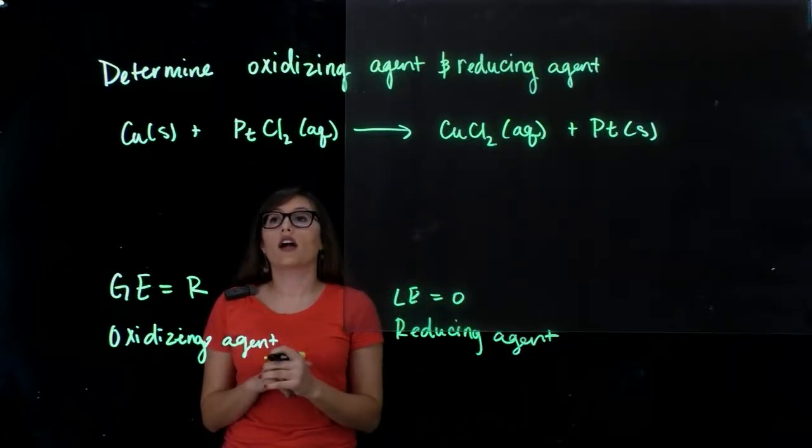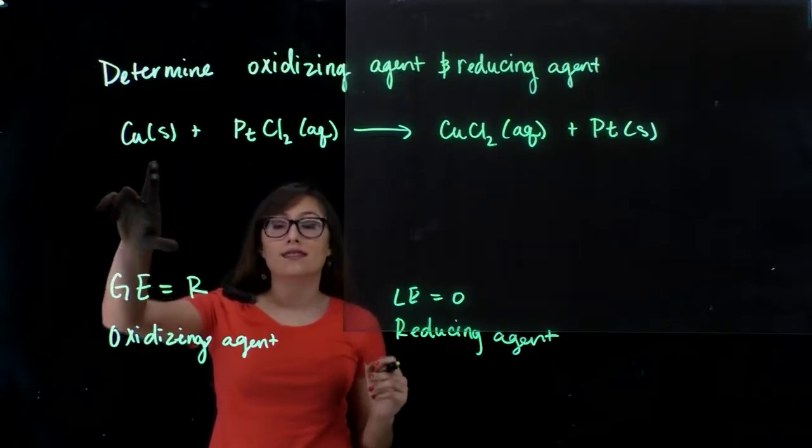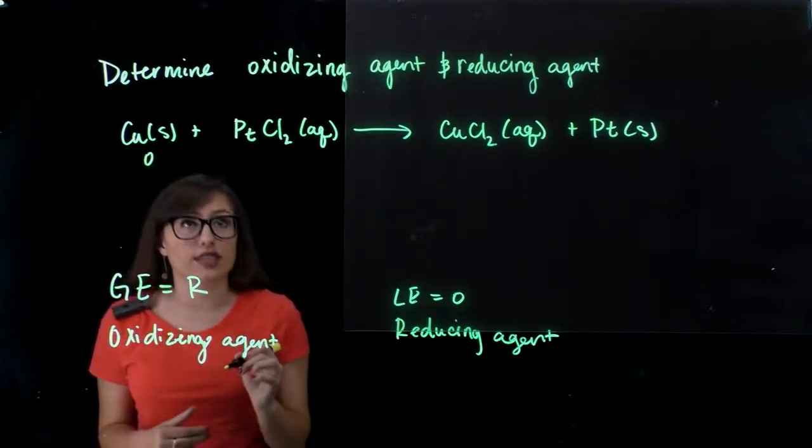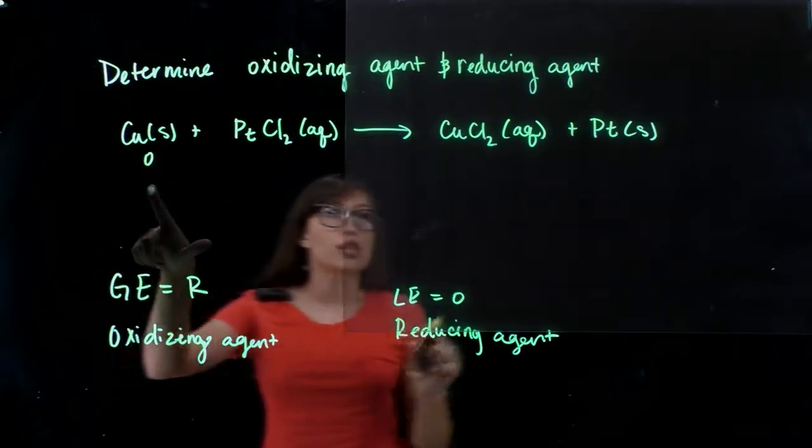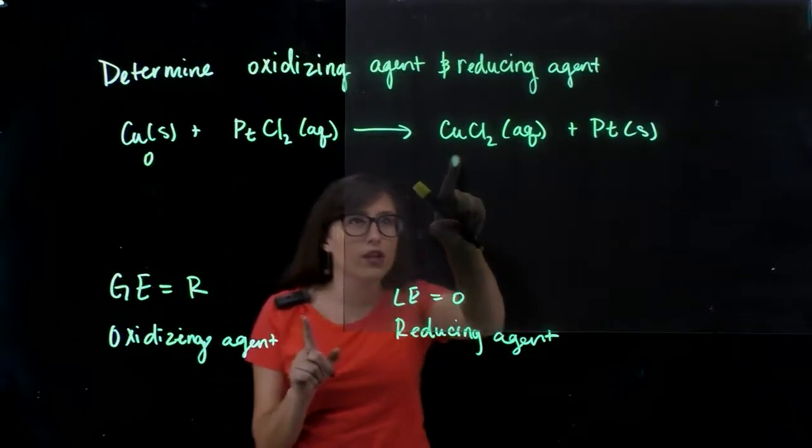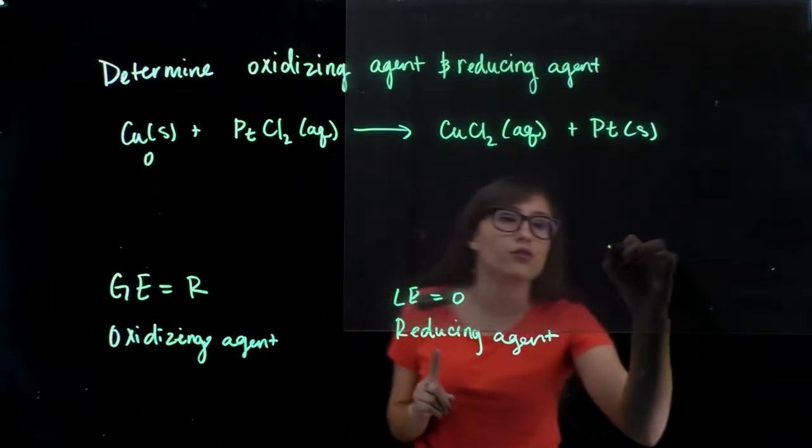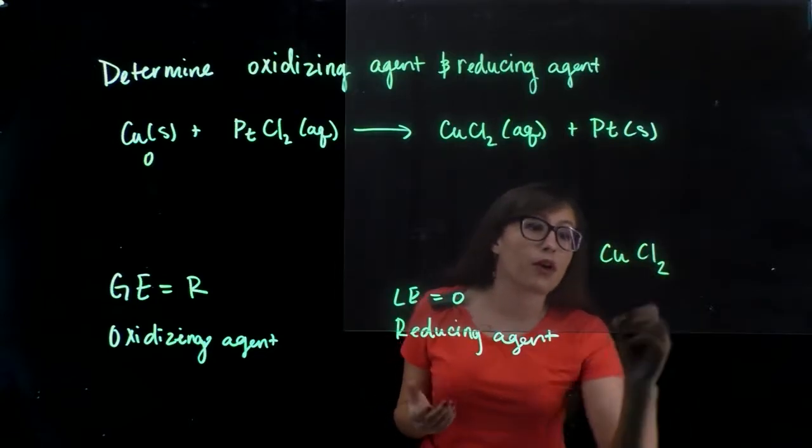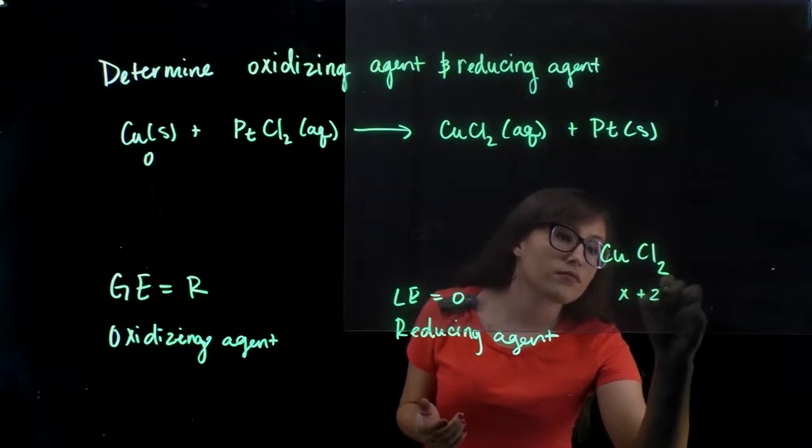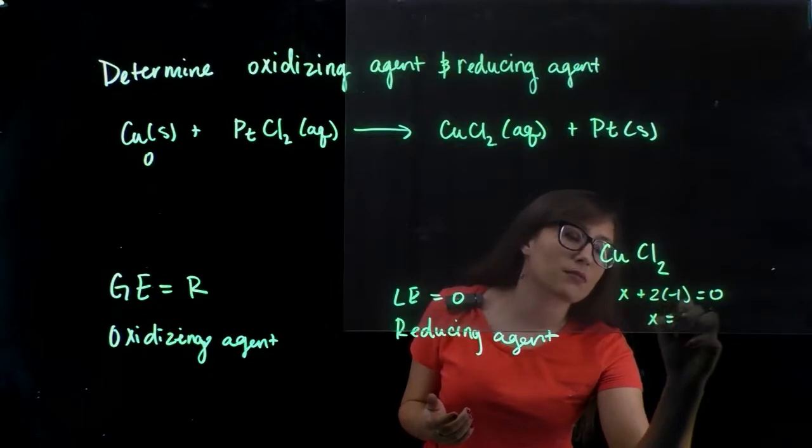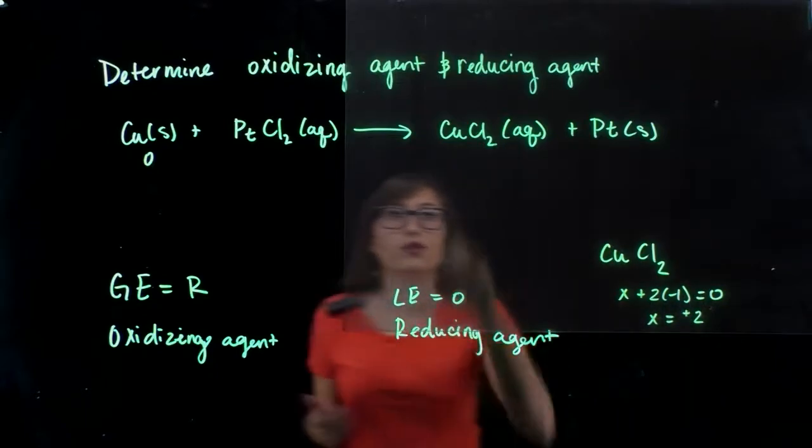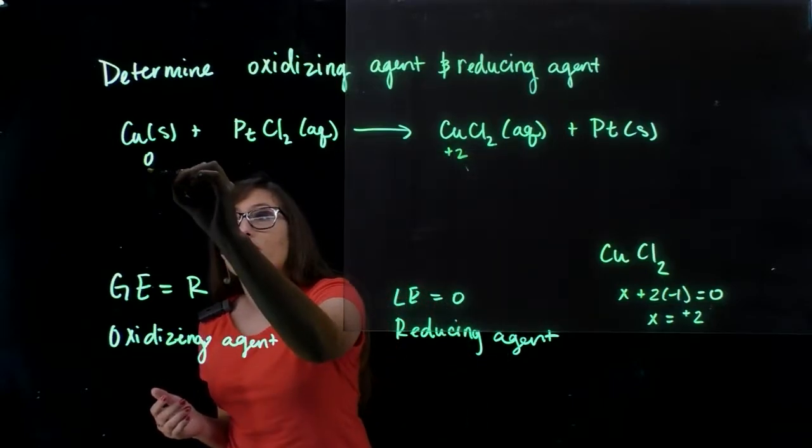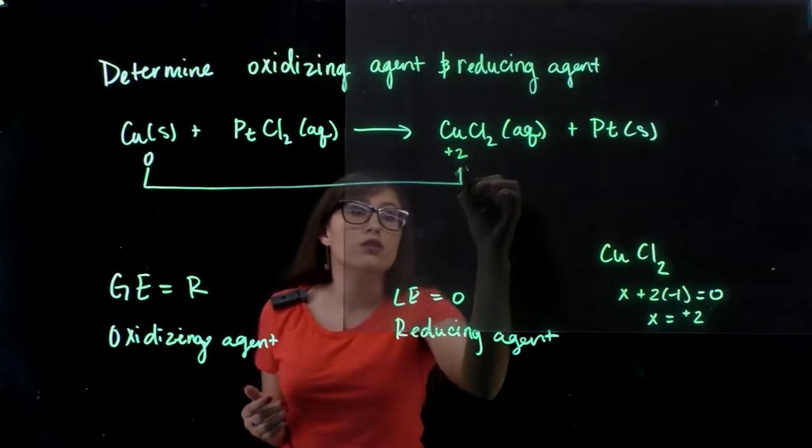So let's look at copper. Copper is a solid, so it is in its elemental state, which has an oxidation state of 0. So it goes from 0 to plus 2. The reason we know copper in this case is plus 2 is because chlorine has an oxidation number of negative 1, this equals 0, so x has to equal positive 2.